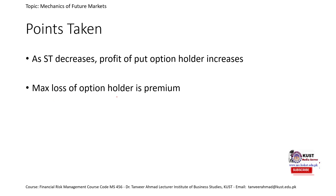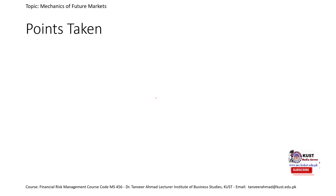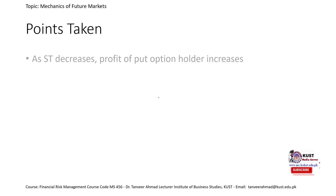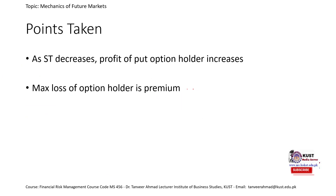The maximum loss of the put option holder is the premium. For example, if ST increases to 1000, the payoff term becomes max(0, 1000−1000) = 0, so the total result is just the negative premium of 74.20. This holds for both the buyer of the call option and the buyer of the put option: for all option holders, the maximum loss is always the premium paid.